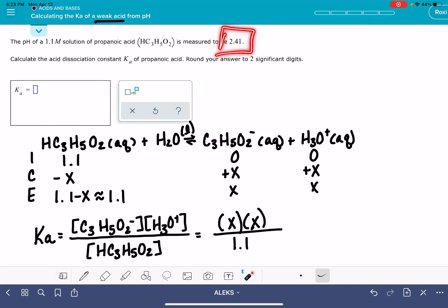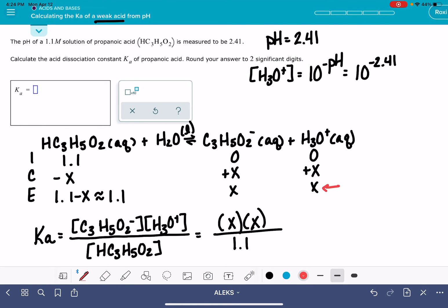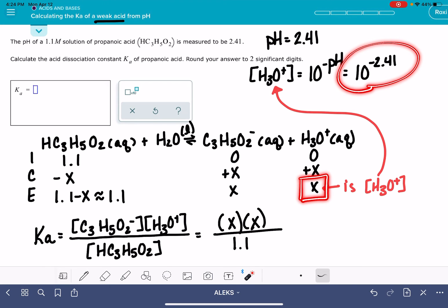This is where pH is going to come into play. The pH of this solution is 2.41. If you recall, we can calculate the H3O+ concentration by taking the antilog, 10 to the negative pH, or in this case, 10 to the negative 2.41. The H3O+ concentration is right here in the ice table. It is X. So this number right here is our H3O+ concentration. We can use the pH value to actually calculate the numerical value of X. It is 10 to the negative 2.41.